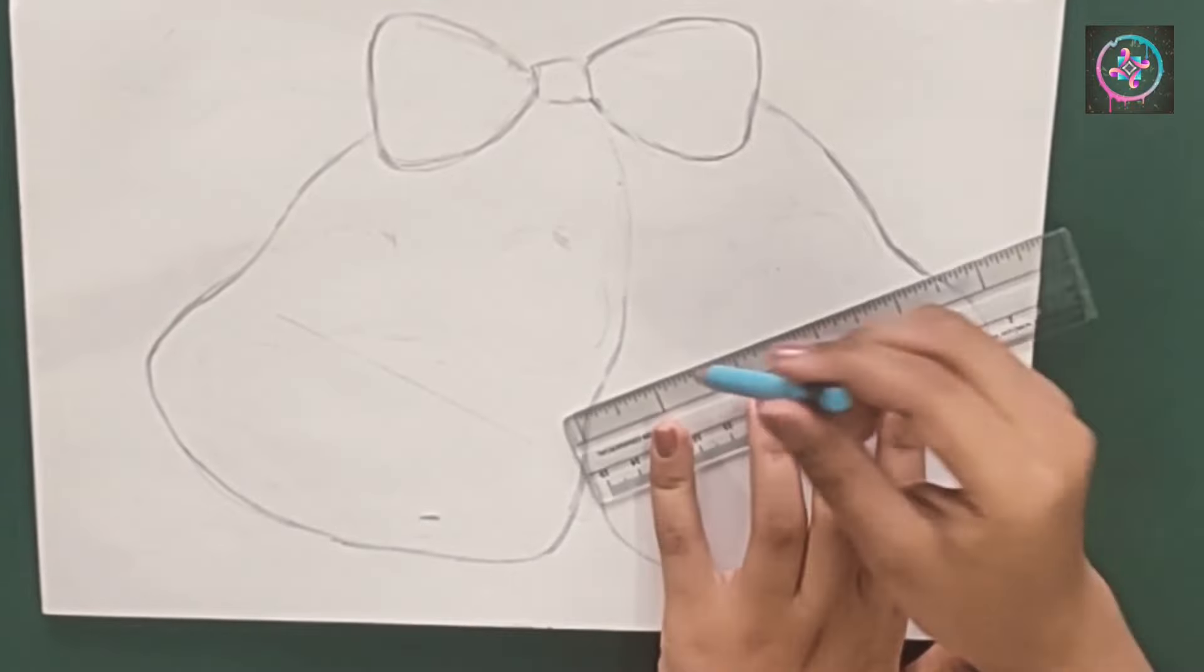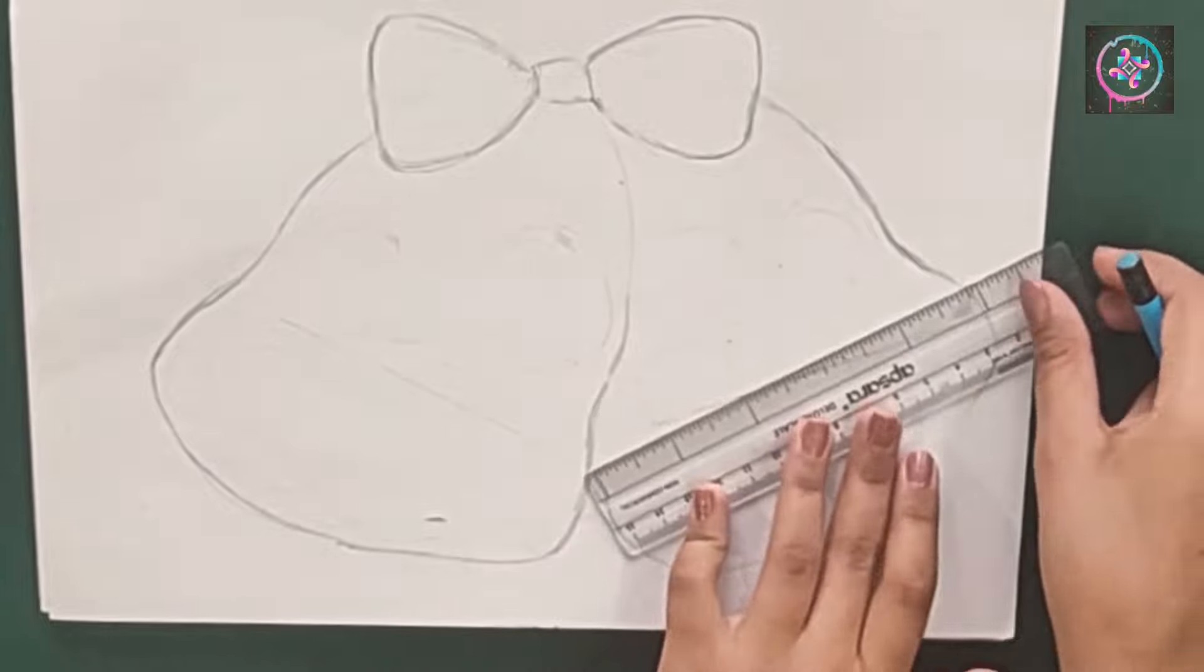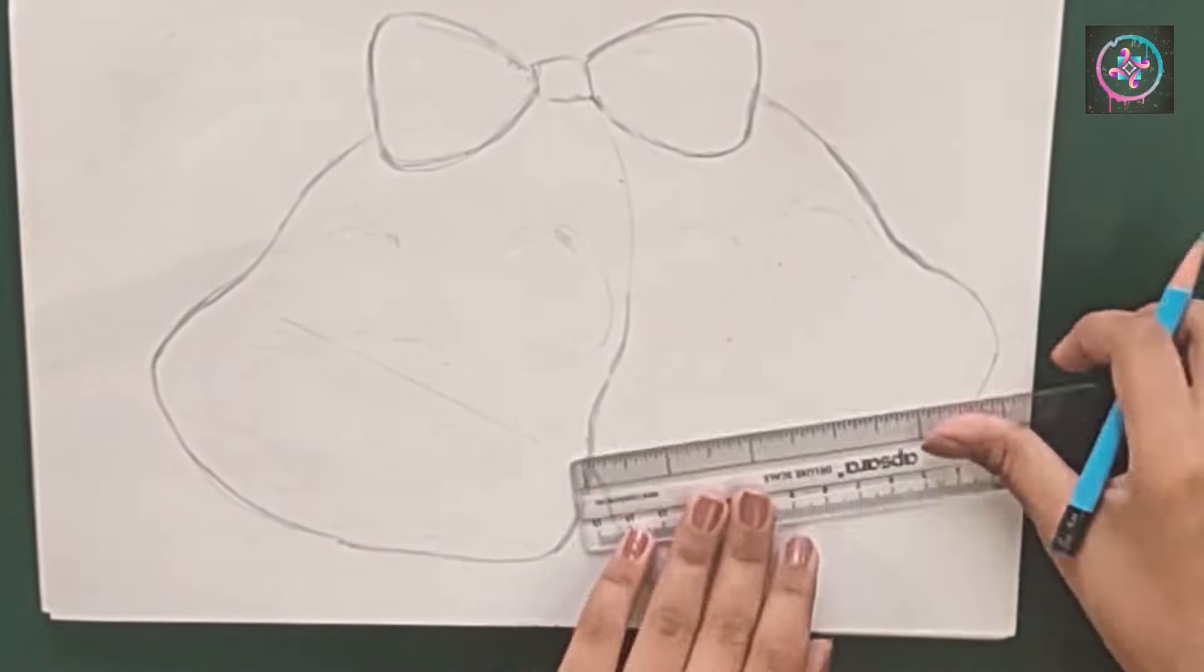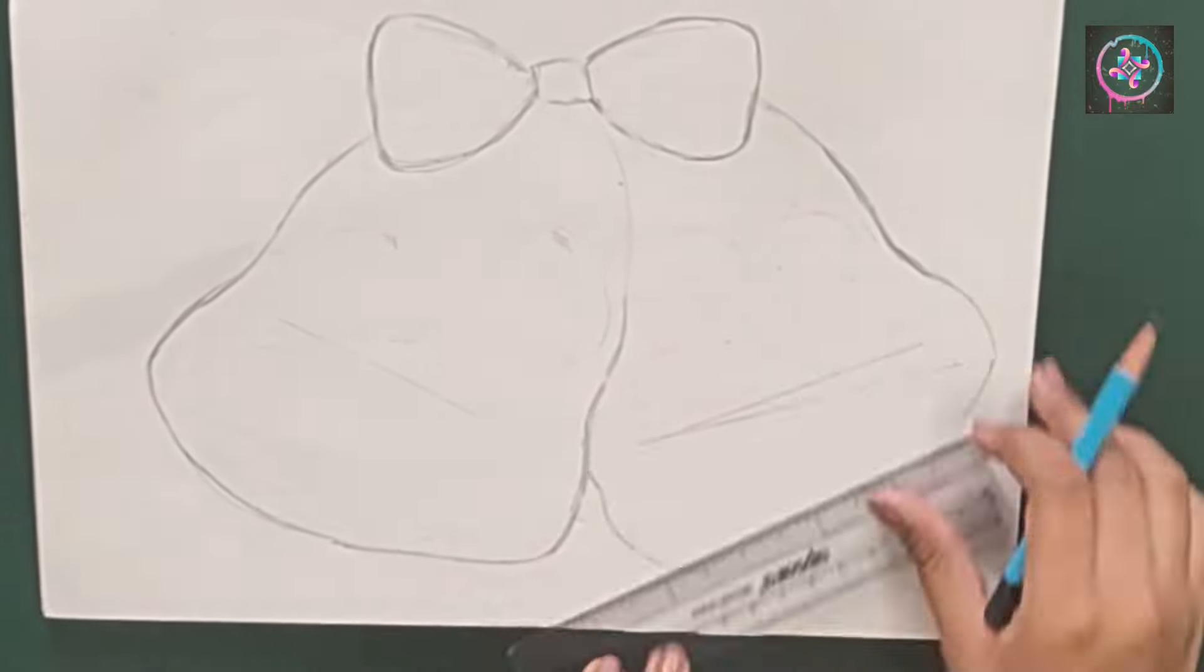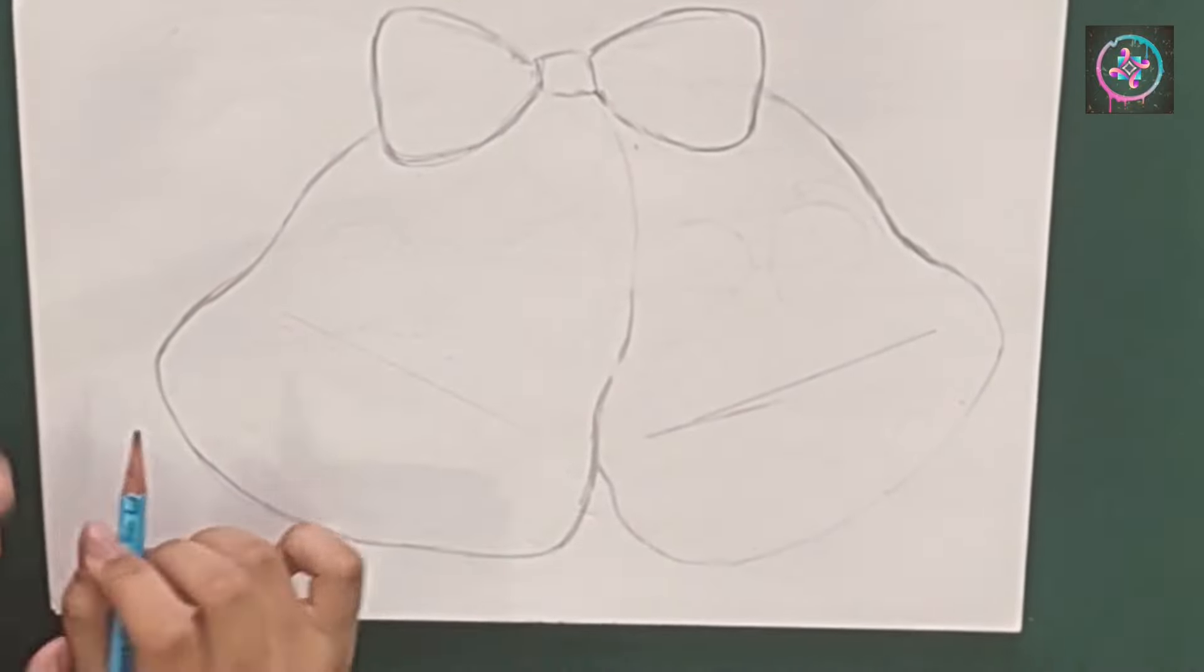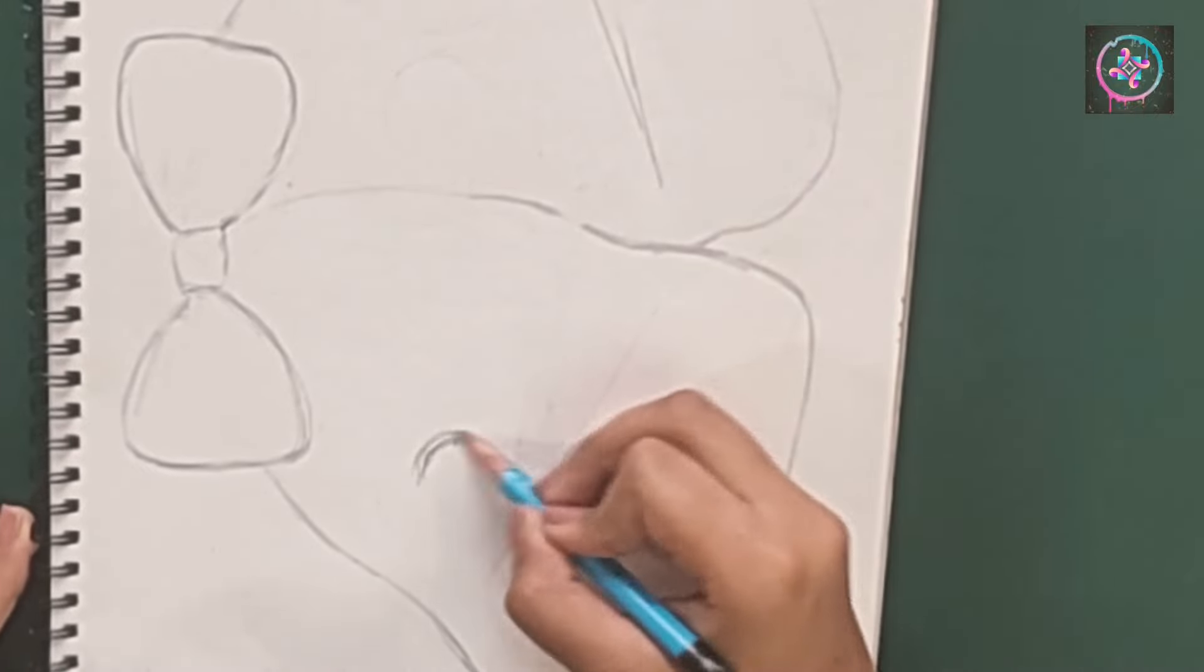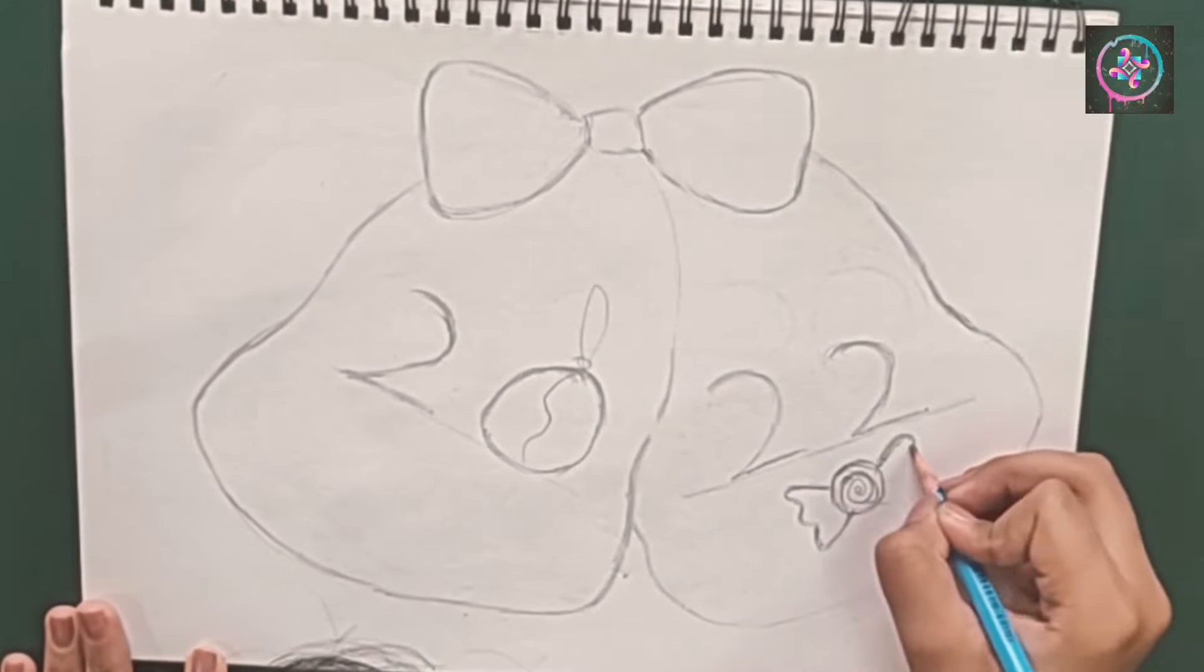In which first I will write the numbers 2022 on the bell. As you can see, I already tried to write those numbers but all the numbers couldn't be of the same size, so I thought a line would help to align them properly. After the numbers, the last and final elements of the drawing are small little doodles of Christmas party and New Year theme.